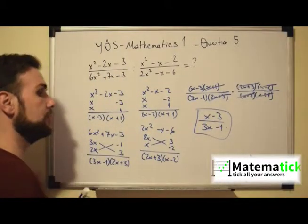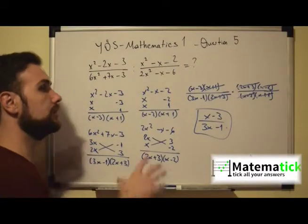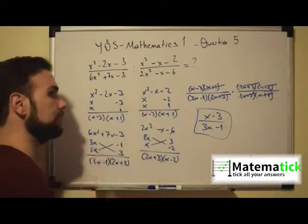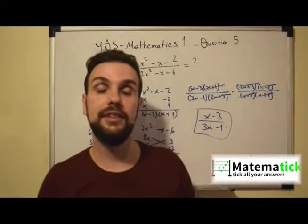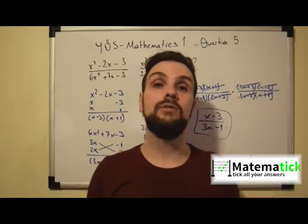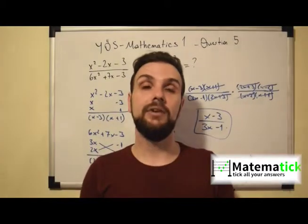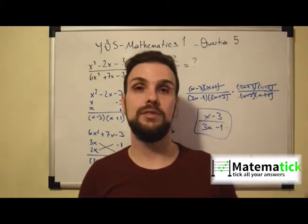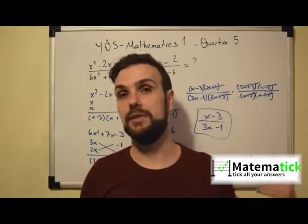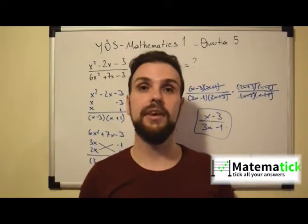So (x - 3)/(3x - 1) is the final answer for this question. This is the process you need to follow. Always try to find alternative ways to write these expressions, which will enable you to simplify as much as possible. This was question number 5, and I will see you on the next one.